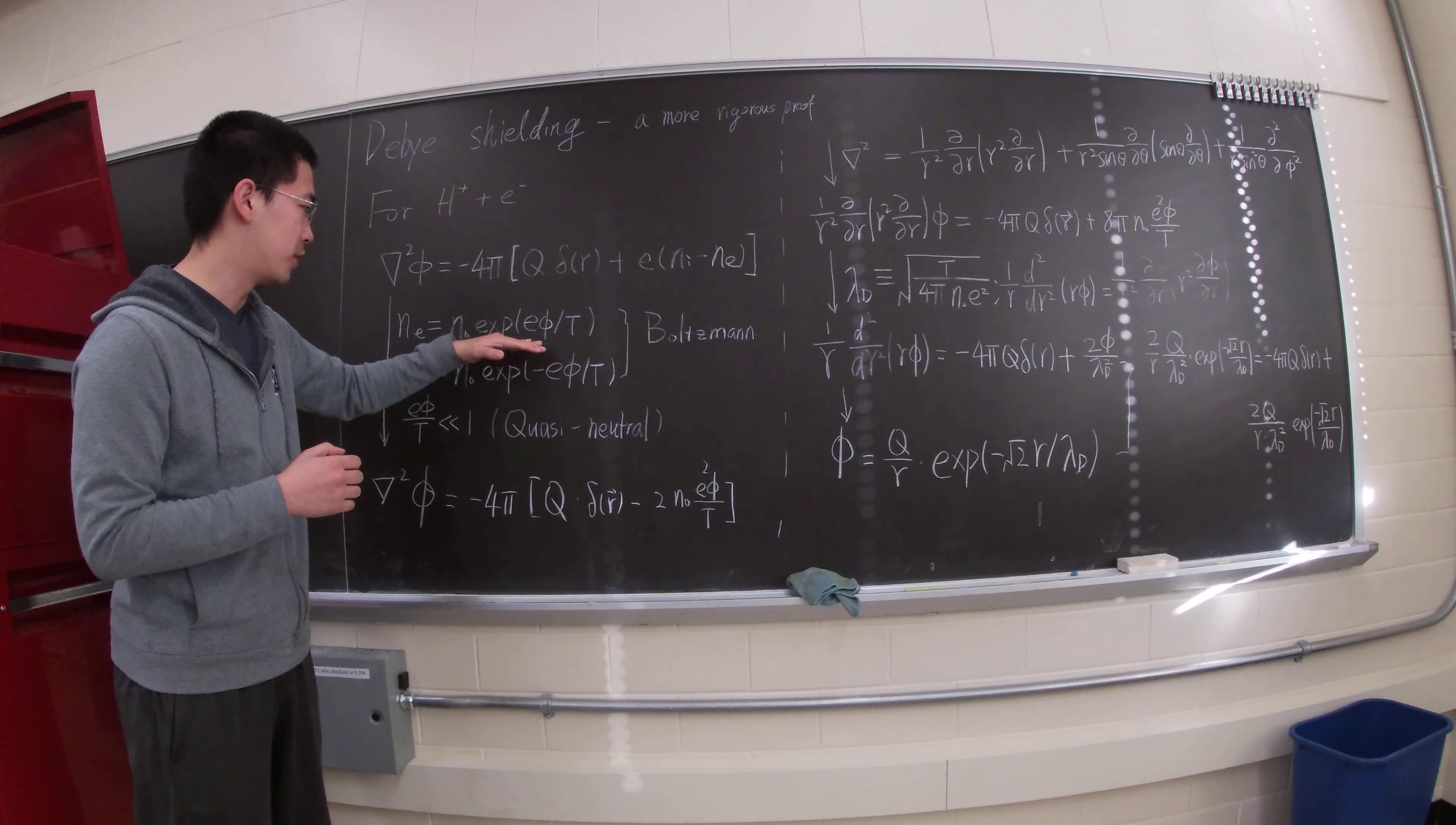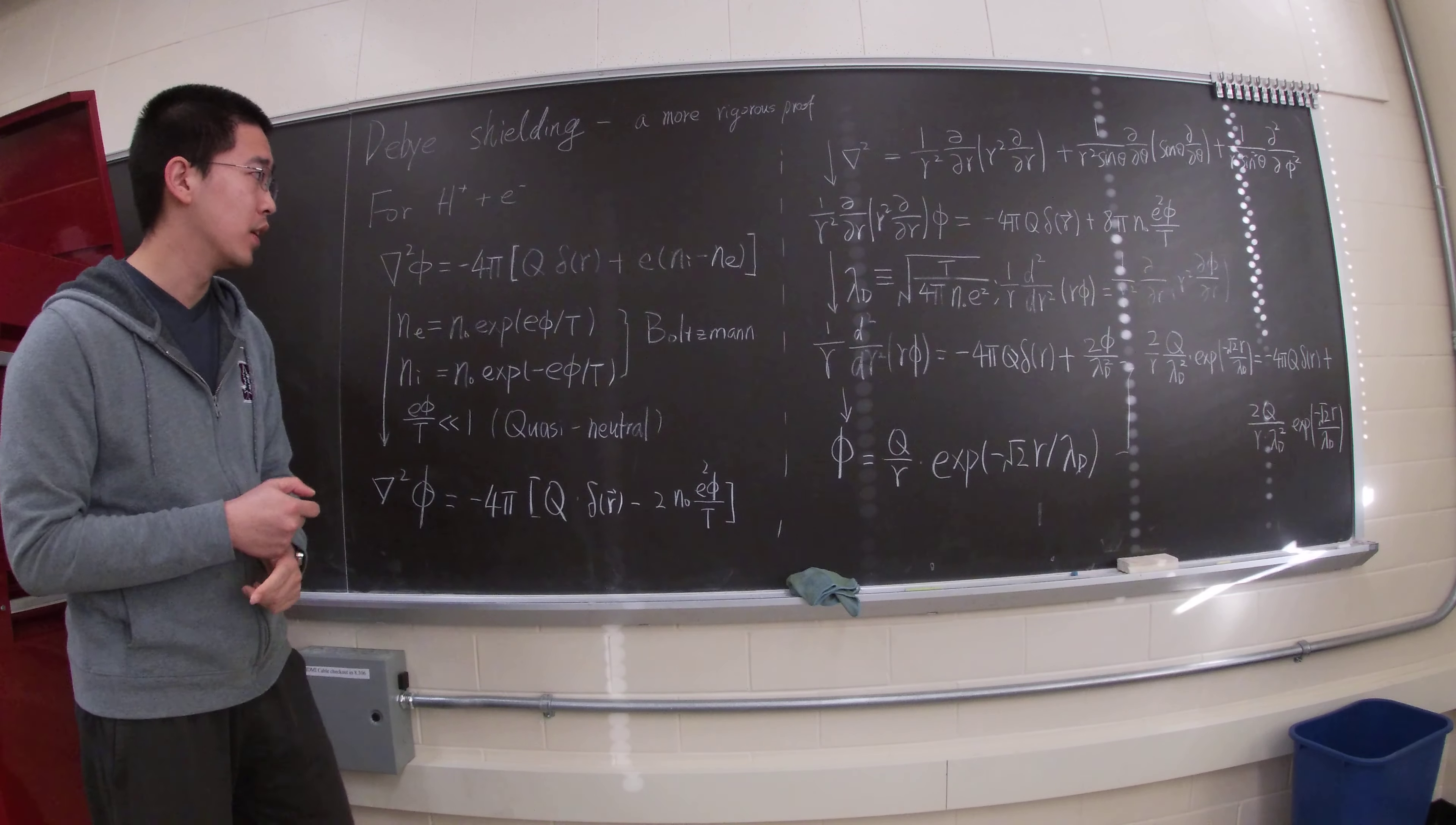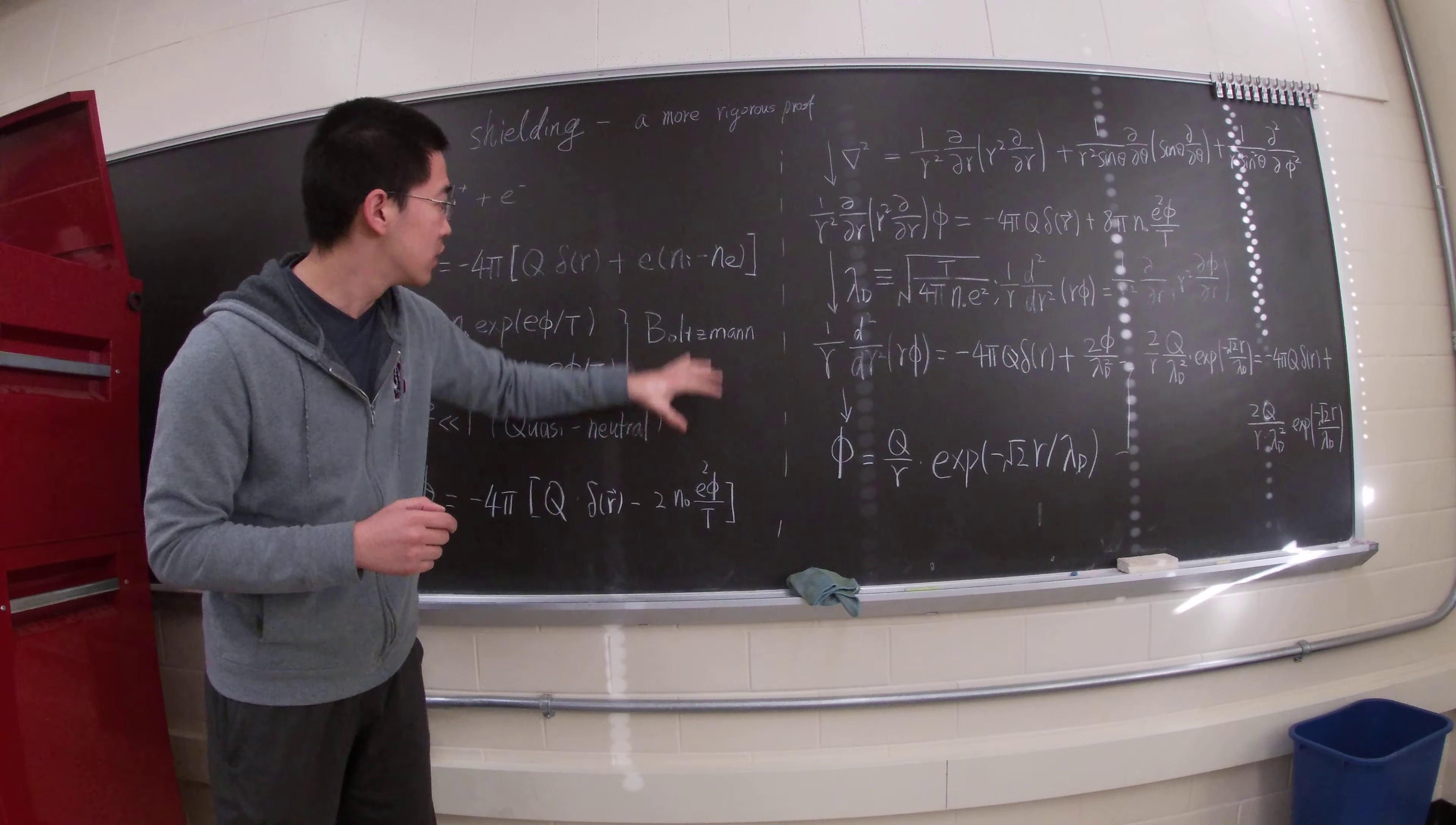First order of this. Basically, 1 plus e phi over t, 1 minus e phi over t. And then plug it in here, and we end up having this expression.